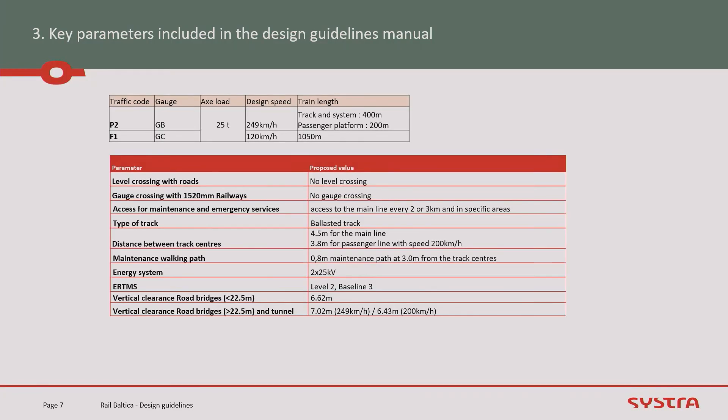Access for maintenance is required every two to three kilometers and at specific locations. The track is a ballasted track. The distance between track centers is 4.5 meters on the main line and 3.8 meters close to the city where traffic speed is lower than 200 km/h. The maintenance walking path is 0.8 meters wide at 3 meters from the track center. The energy system is 2×25 kV. For ERTMS, level 2 baseline 3 is chosen. We have also defined vertical clearance for road bridges and tunnels.